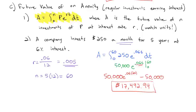When we plug this into the calculator, we find the account at the end of five years should be $17,492.94. That's how we calculate the future value of an annuity — putting so much in every month or every year — including the interest earned over the time.